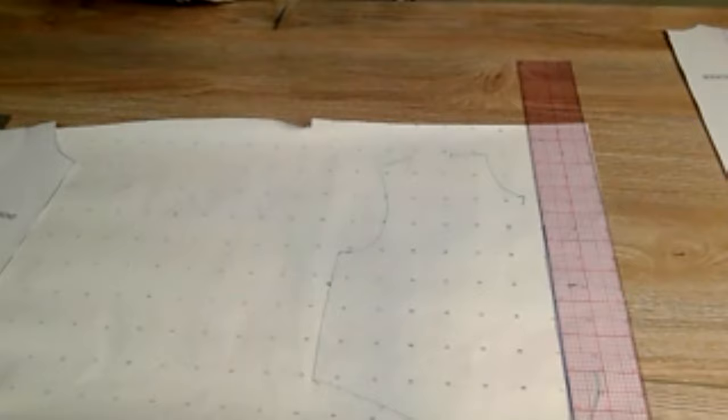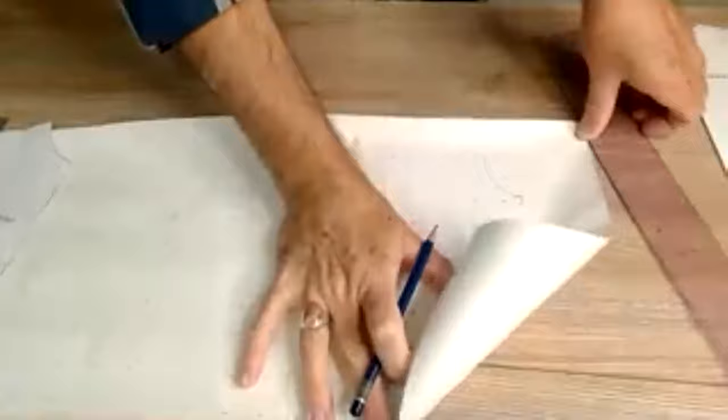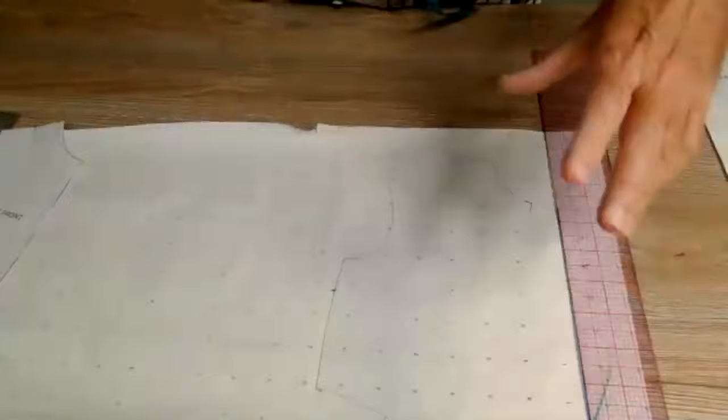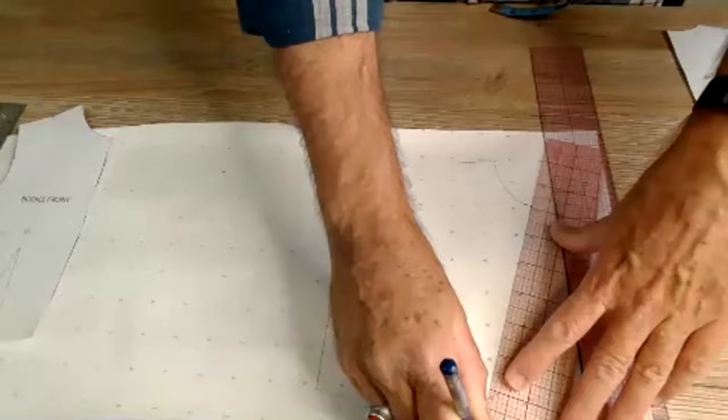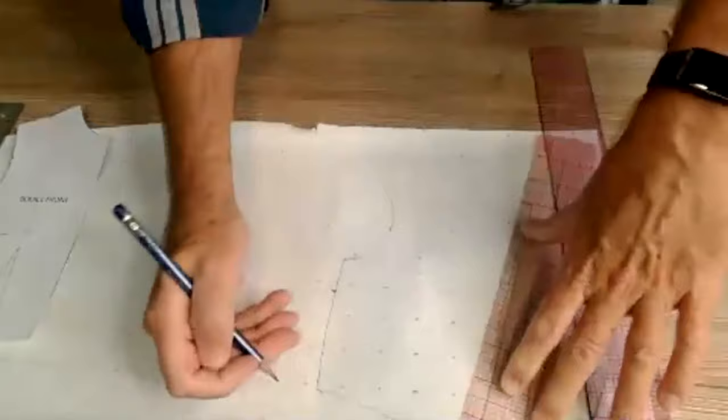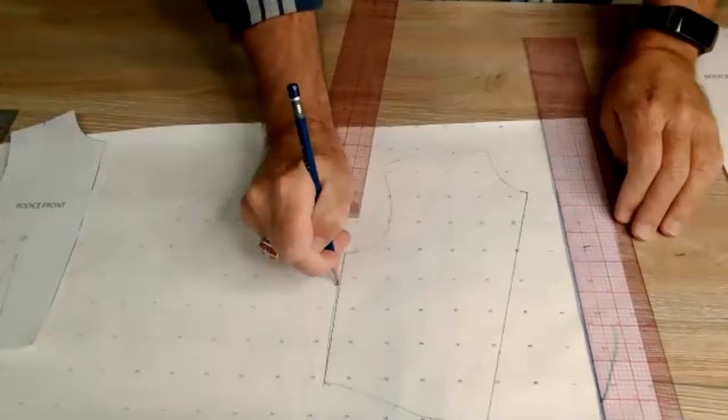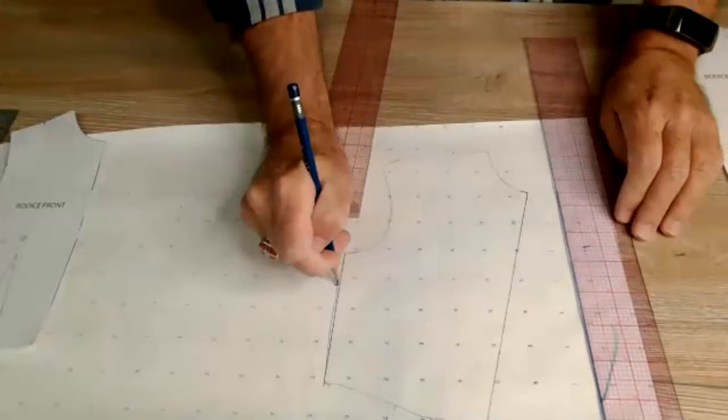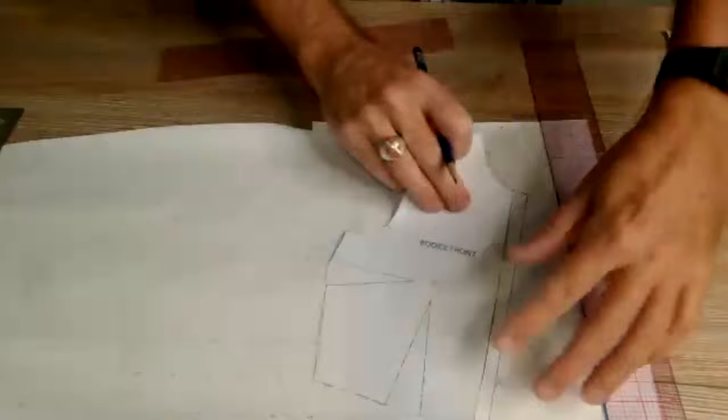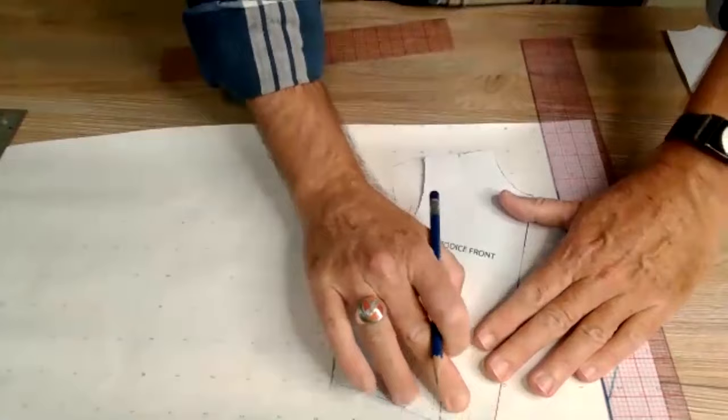What's happened is I'm going to take my ruler now and I am going to connect that front line, the center front. Then we already have the side connected. I'm going to go ahead and just straighten that out. That's where our old dart was.